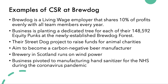BrewDog also has a Street Dog project to raise funds for animal charities. They aim to become a carbon negative beer manufacturer. Their main factory in Aberdeenshire, Scotland, runs on wind power. And this spring, BrewDog pivoted away from manufacturing beer to producing hand sanitizer for the NHS during the coronavirus pandemic.